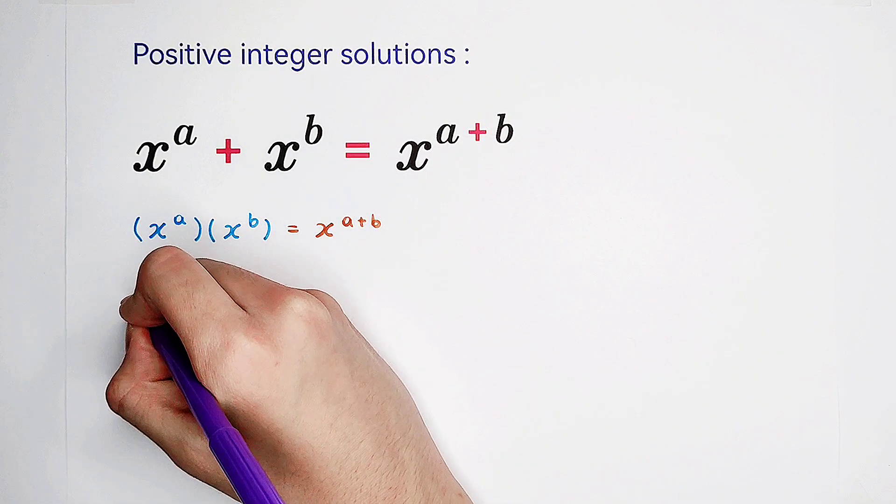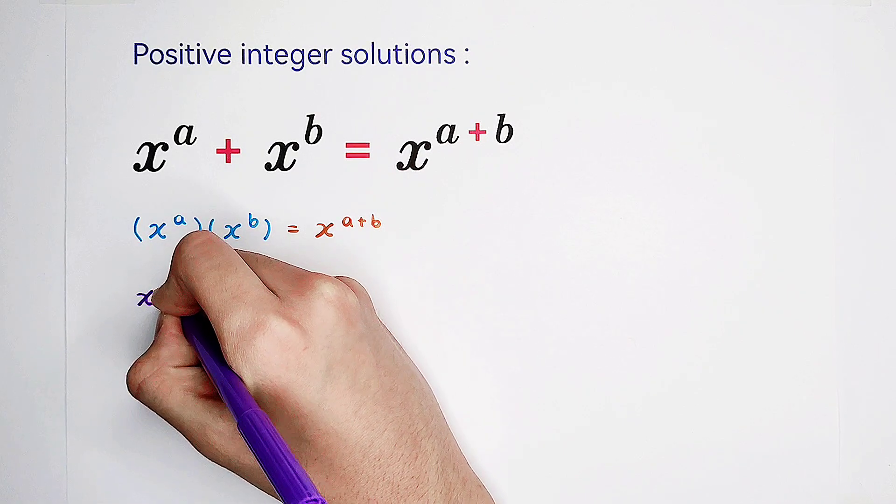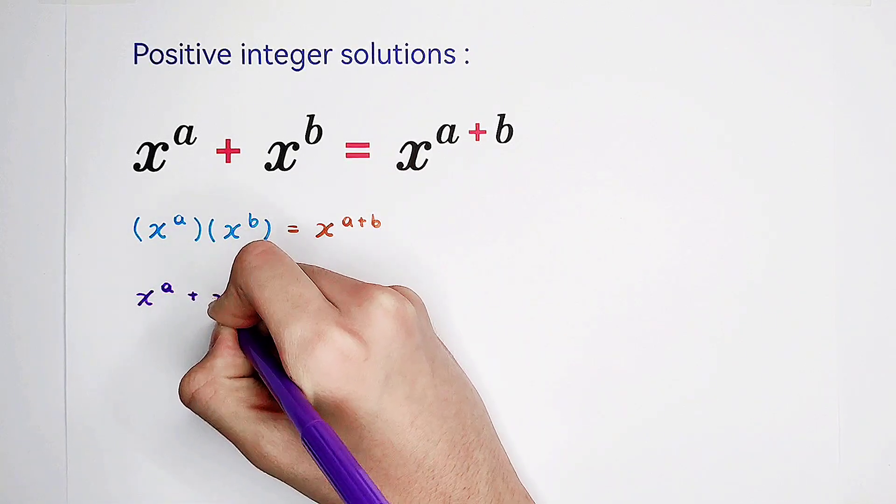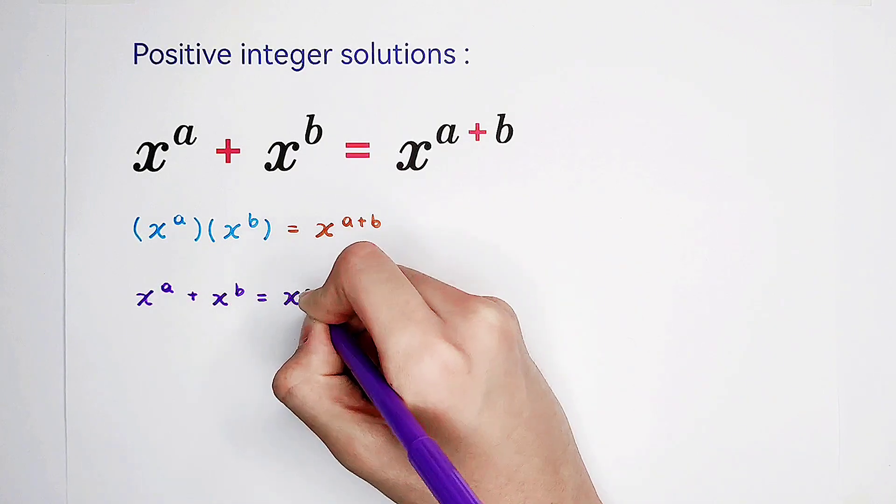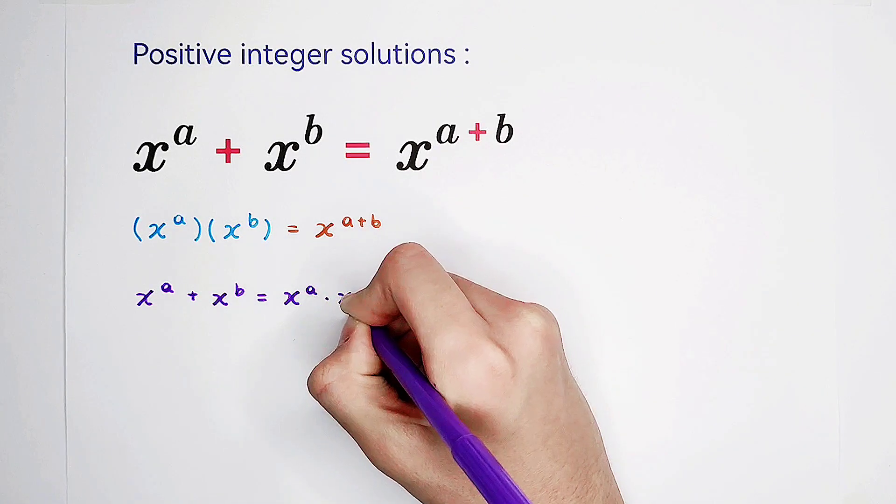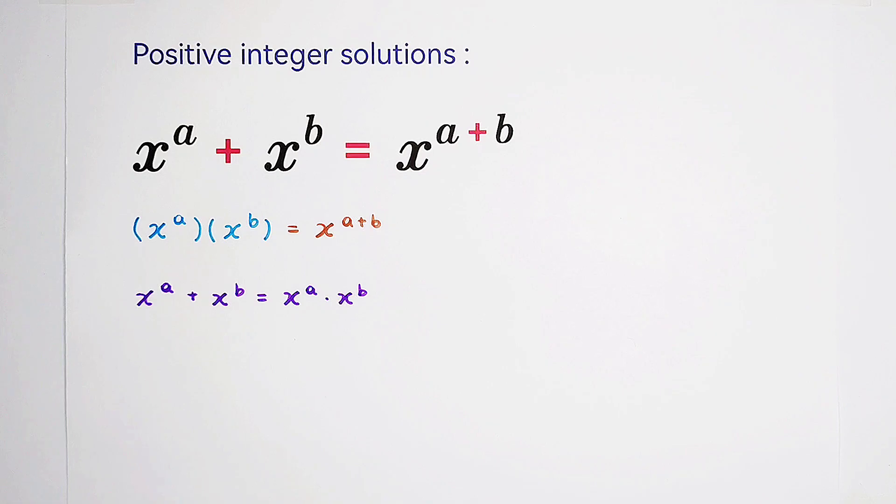So the left-hand side is the sum of these two guys, and the right-hand side is multiplication. Now we can do the substitution.